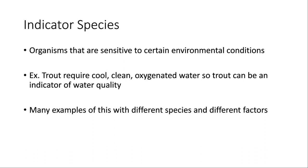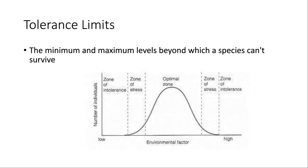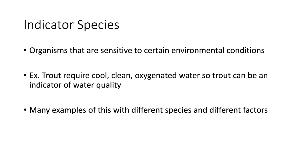It can be time-consuming to measure all environmental factors, so what can be done sometimes is use an indicator species. Indicator species are extremely sensitive to certain environmental conditions. For example, trout need very cool, very clean, and highly oxygenated water. So trout are often used as an indicator species for water quality — if there's a trout stream, those trout need very clean water, which is a good indicator that the water quality is fairly good.